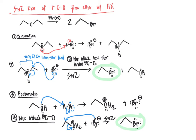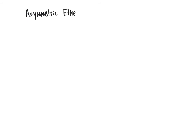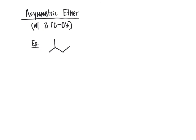Let's look at an example with an asymmetrical ether, still focusing on asymmetrical ethers that have two primary carbon-oxygen bonds. For our example, we'll react it with HI to go forward with the reaction. We'll sketch out the mechanism as a reminder and to think about the order of reactions since we now have an asymmetrical ether.